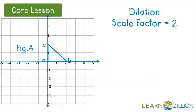Let's take a look at a dilation on a graph with a scale factor of 2. We'll place the triangle on the origin, and then we're going to multiply each coordinate by 2. If I look at point A, 0 times 2 — well, 0 times anything is 0 — so A prime will be the same as A.